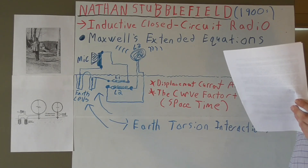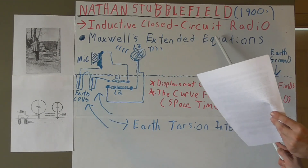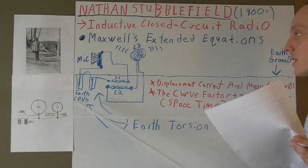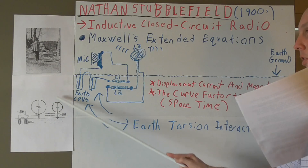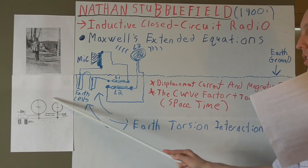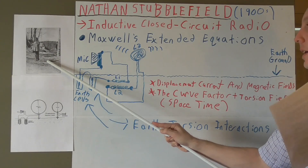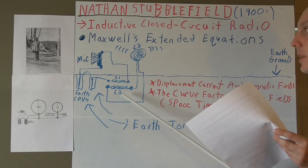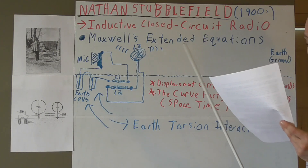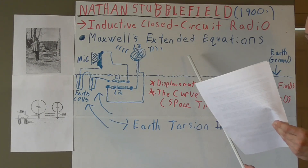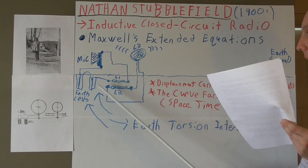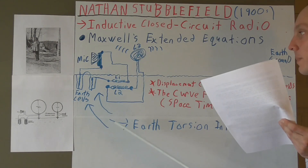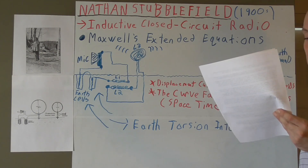It is true that Stubblefield's system is based on the application of some of Maxwell's extended equations, because I don't see any other way this would have worked without taking the extended equations into consideration. Such a primitive system under the new Oliver Heaviside simplified equations just didn't allow for a system such as he had. But with my modifications taking Maxwell's extended equations into consideration, all of a sudden this can work and we have an explanation of how it could. The key is specifically the displacement current and its coupling with the magnetic fields — a concept no longer included in the revised Heaviside equations.